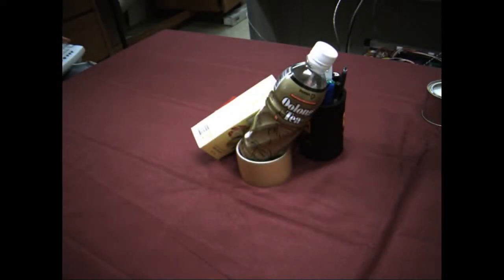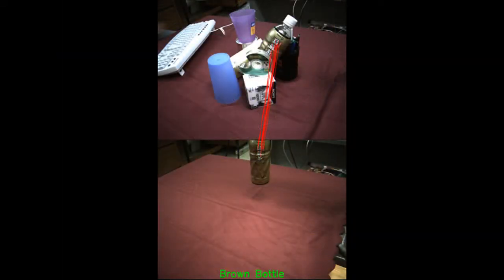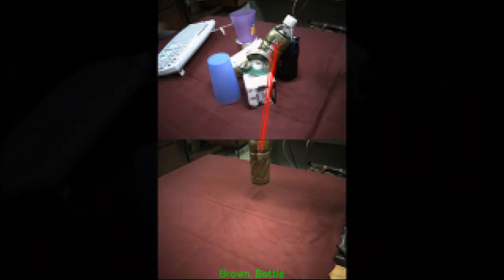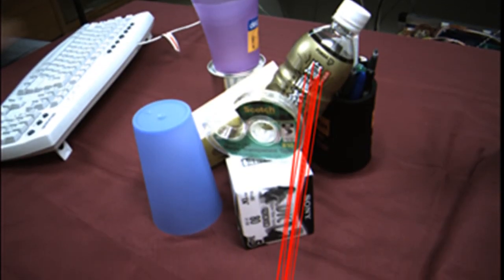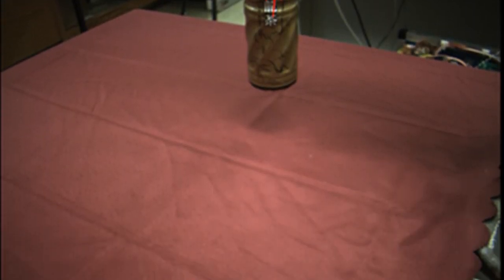This allowed us to test the object recognition results on the robot-built object models by giving it test images like this. This is a test image testing whether the robot still remembers the brown bottle, and this is the result. The robot has successfully said that it's the brown bottle, and you can see from the red lines there the SIFT feature matches are numerous.